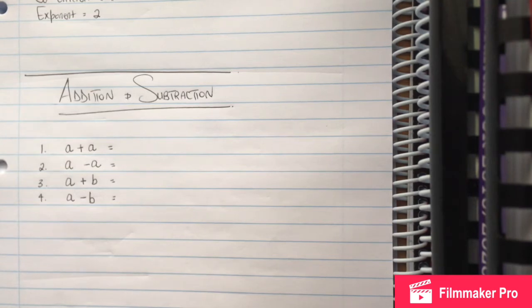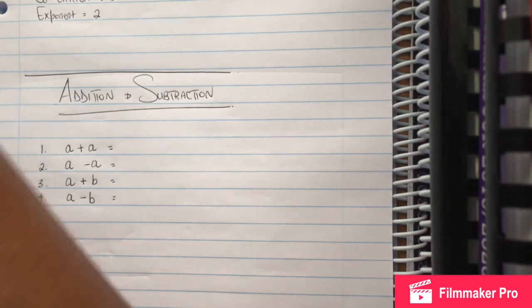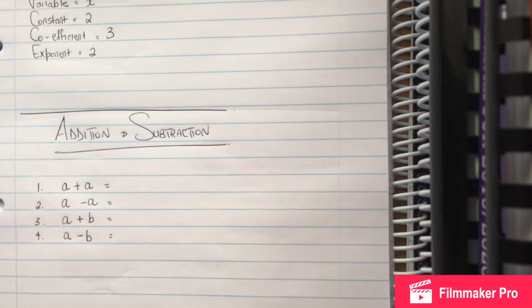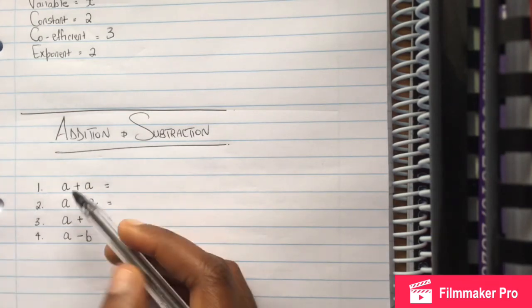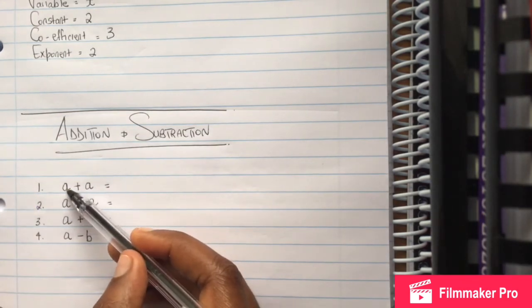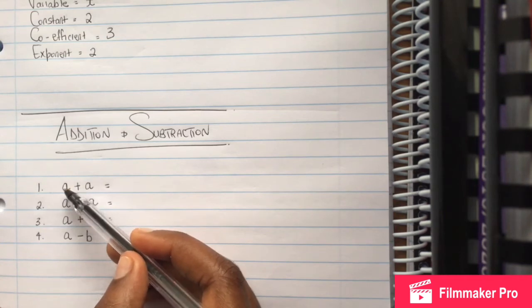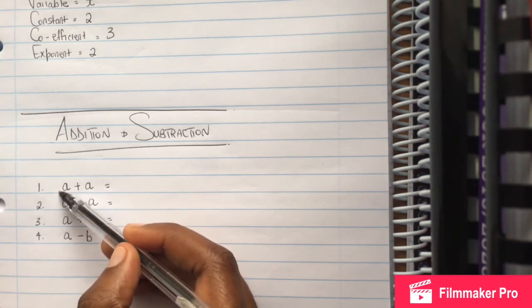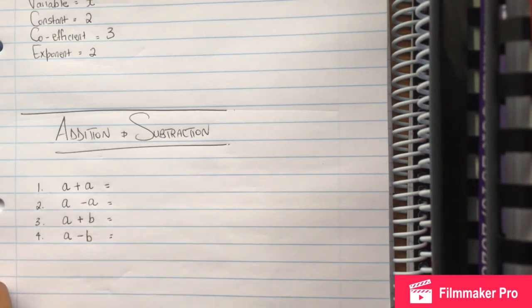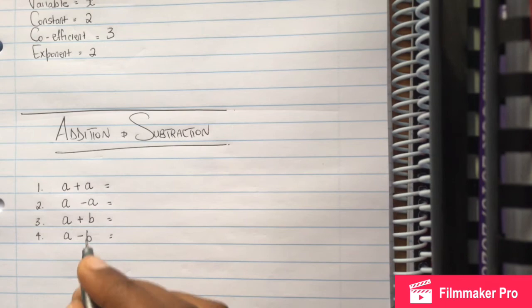We need to understand that when you see a variable, even if there's no number written in front of it, there is still a coefficient present.